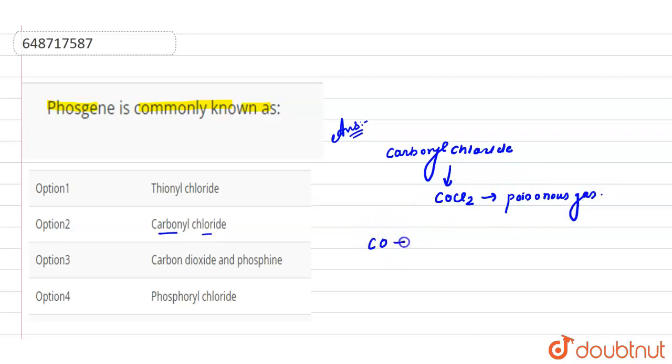Here, the reaction when CO, carbon monoxide react with Cl2, presence of sunlight, then it form phosgene gas, that is COCl2.